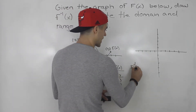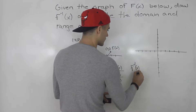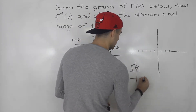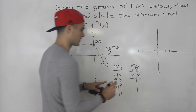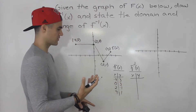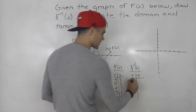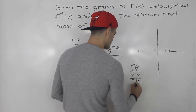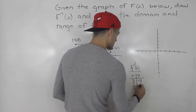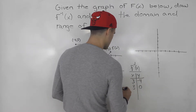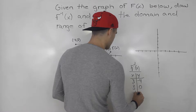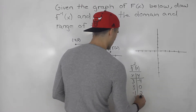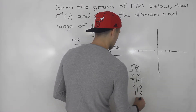Now we can get the table for the inverse. All we do is take these coordinates and just flip them. So negative 4 and 3 would turn into 3 and negative 4. This would be 3 and 0. This would be negative 1 and 2. This would be 1 and 4.